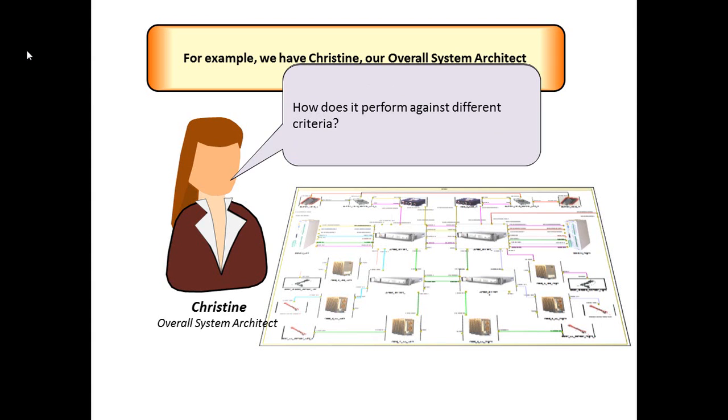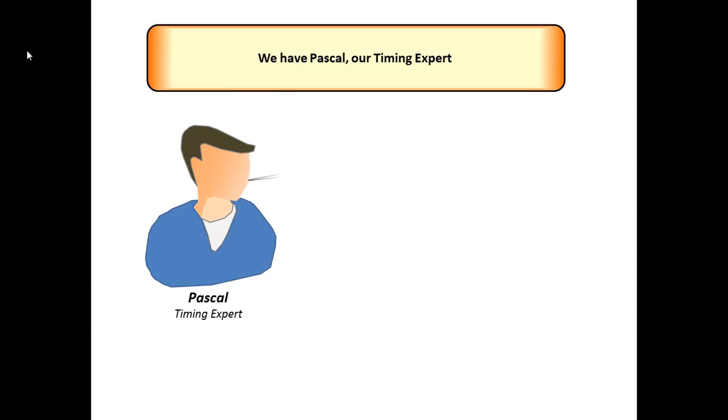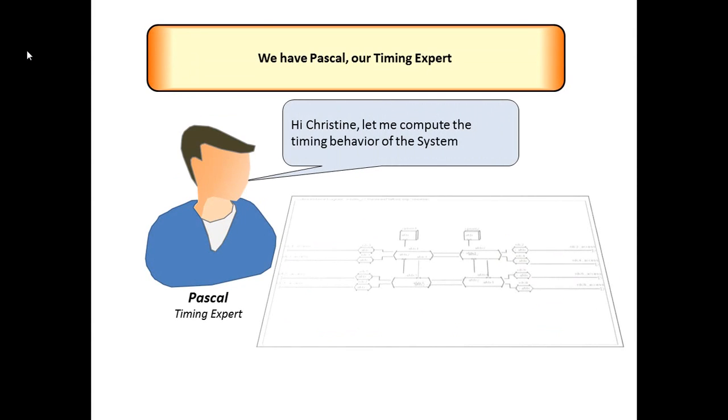But she can't do it alone. She needs other experts to help her out. For example, she needs Pascal. His job is to calculate and verify that the various control signals around the aircraft reach their destinations within the given time limits. So that his timing models are accurate, they need to reflect the current architecture.